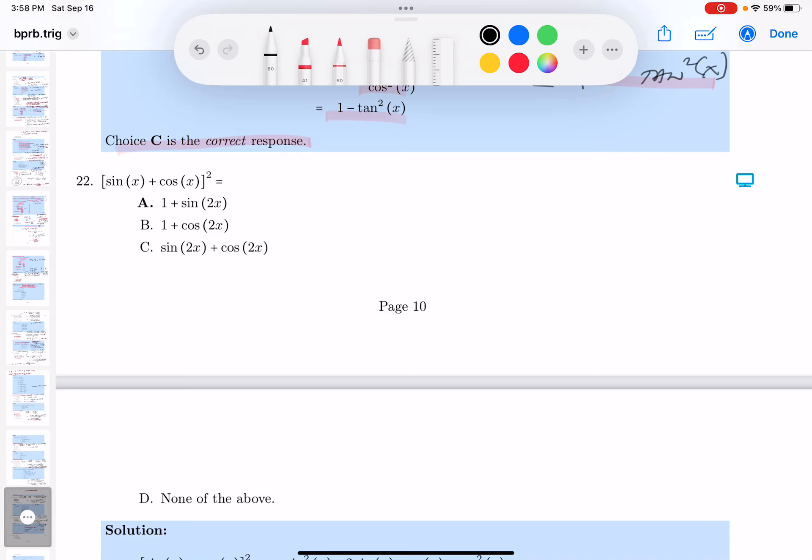My recommendation is to expand it. You're going to get sine squared plus 2 sine x cosine x plus cosine squared x.